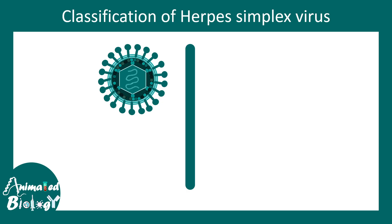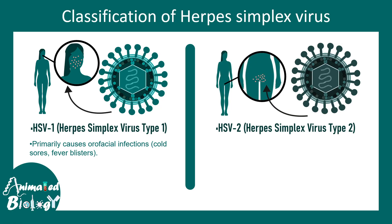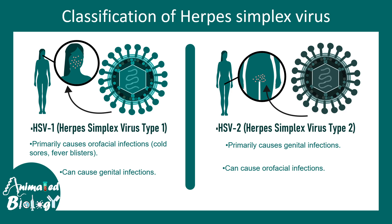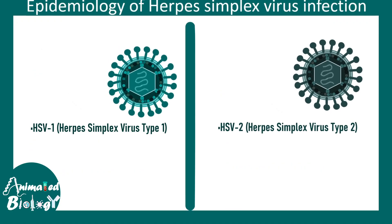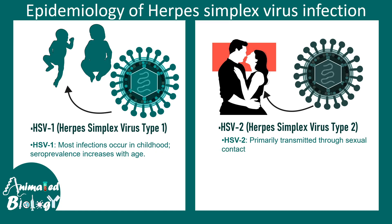There are two types of Herpes simplex virus: HSV-1 and HSV-2. HSV-1 is responsible for orofacial infections, while HSV-2 is associated with genital infections. However, this is not a hard and fast rule — HSV-1 can also affect the genitalia and HSV-2 can infect the orofacial region. HSV-1 generally infects children and seroprevalence increases with age, while HSV-2 is primarily transmitted through sexual contact.